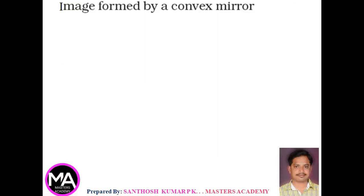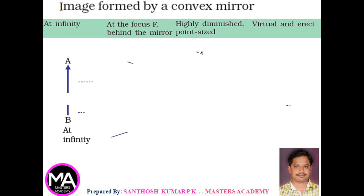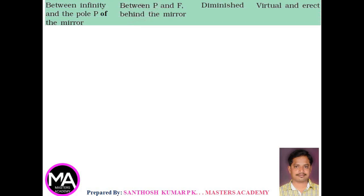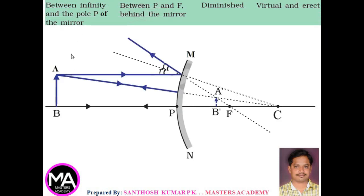Image formed by convex mirror: whenever an object is at infinity, the rays are parallel. After reflection they diverge, and when drawn backward, the image appears to come from a point — the image is formed at the principal focus F, behind the mirror. It is highly diminished and point-sized, virtual and erect. Whenever an object is kept between infinity and the pole, the image is formed between P and F, behind the mirror. It is diminished compared to the object and is again virtual and erect.